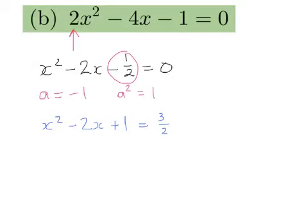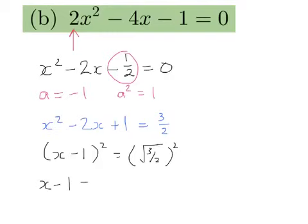Now we can turn these both into squares. So we have x minus 1, because a is minus 1, squared equals square root of 3 over 2 squared. Which means that x minus 1 equals plus or minus the square root of 3 over 2.